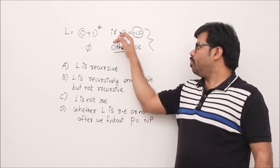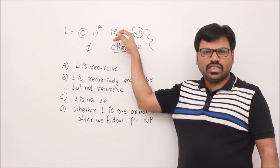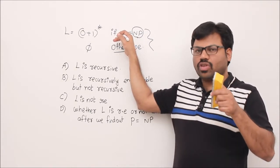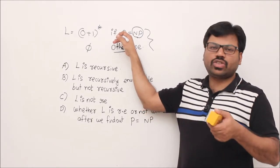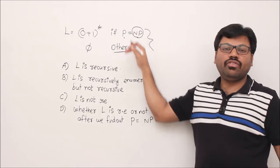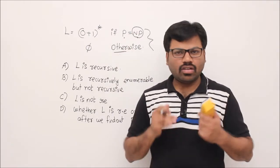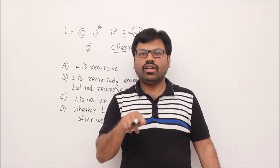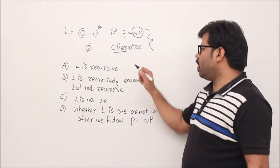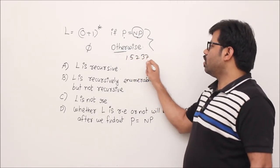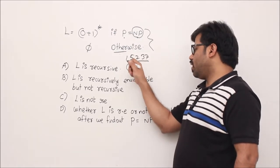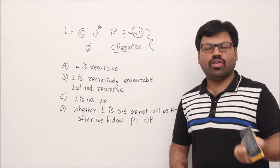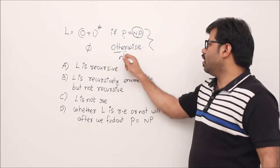P problems are generally computationally easy — we have an algorithm to solve them in polynomial time such as n², n³. NP problems are those we can verify in polynomial time: if someone gives us a solution, we can check whether it is correct in polynomial time. For example, sorting is a P problem because we can solve it in polynomial time — n², n³, any n^k counts as polynomial.